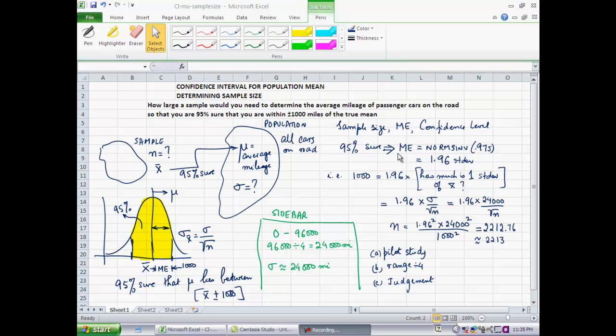Let's use the Excel built-in function. If I want to be 95% sure, norm.s.inv of 0.975. The built-in function norm.s.inv requires that you provide the full area to the left of the limit you're trying to determine. I'm trying to determine what this upper limit should be in terms of the confidence interval. I want the yellow shaded portion to be 95%, the left tail is 2.5%, so you add those two together, you get 0.975. Norm.s.inv of 0.975 turns out to be 1.96 standard deviations. This 1,000 miles has to equal 1.96 standard deviations.